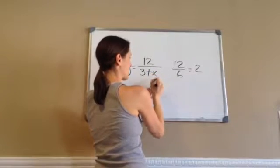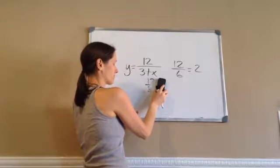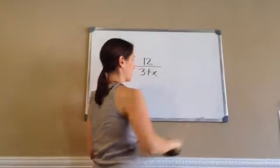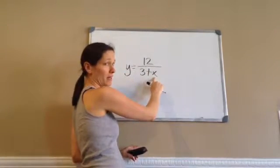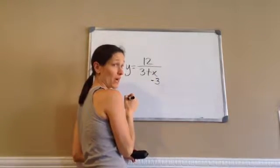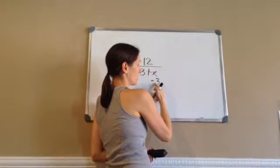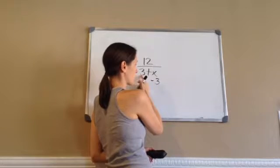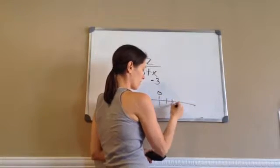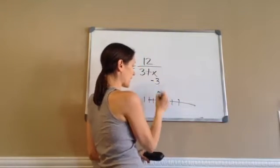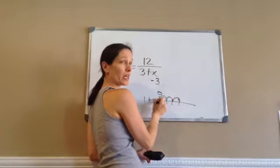Because 3 plus 0 would give me 3. And then 12 divided by 3 would be 4. So let me show you what x cannot be. x cannot be negative 3. Do you know why? 3 plus negative 3 is what? A positive 3 plus a negative 3. 1, 2, 3 plus negative 3. 1, 2, 3. 0.